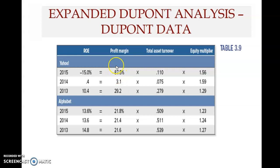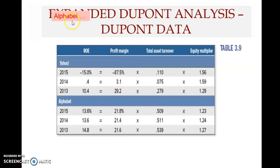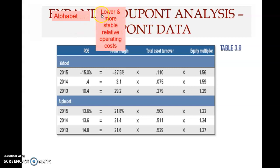Looking at profit margin first: in 2015, Yahoo's profit margin was negative 87.5%, meaning Yahoo had a huge loss, whereas in 2013 it had been 29.2% — quite high. Alphabet's profit margin, by comparison, was more or less stable at around 21–22%. We can say that Alphabet has lower and more stable relative operating costs.